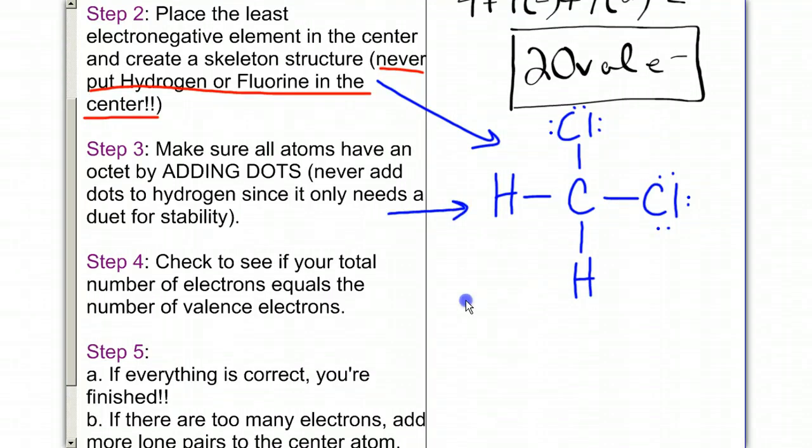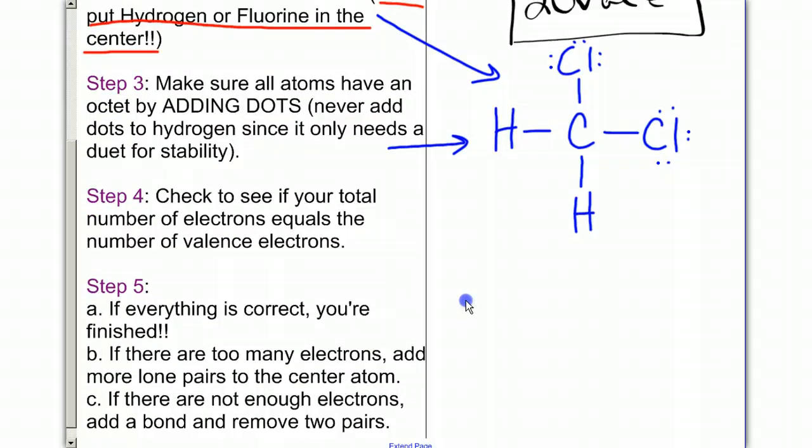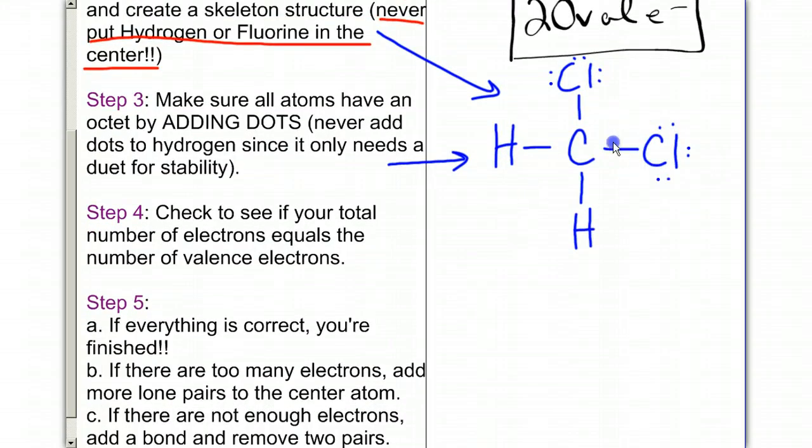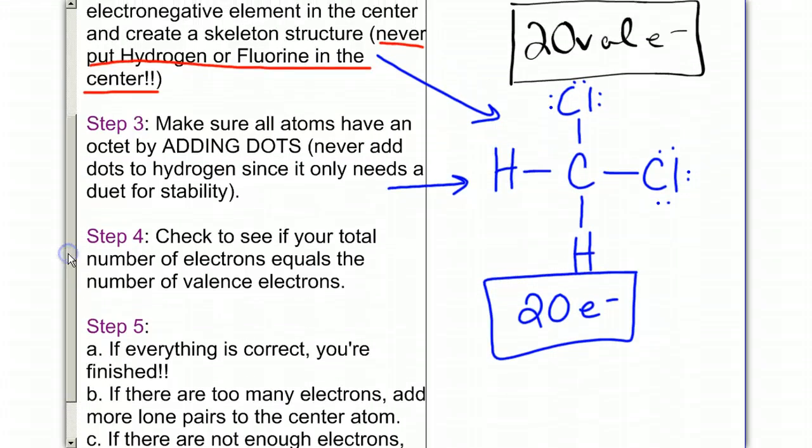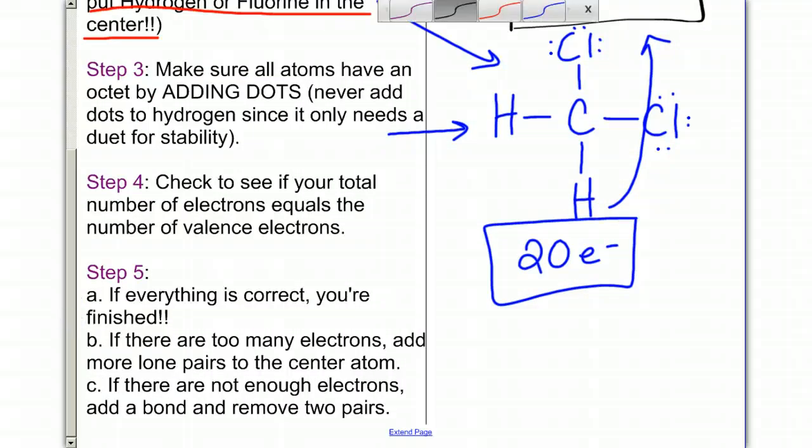Step four is going to be to check to see if your total number of electrons equals the number of valence electrons. So I'm going to add up everything: 2, 4, 6, 8, 10, 12, 14, 16, 18, 20. I did have 20 electrons total when I counted, which happens to match my number of valence electrons. And so this structure is completed. So the final answer is going to be C with two H's, two chlorines, and that's my final Lewis structure right here.